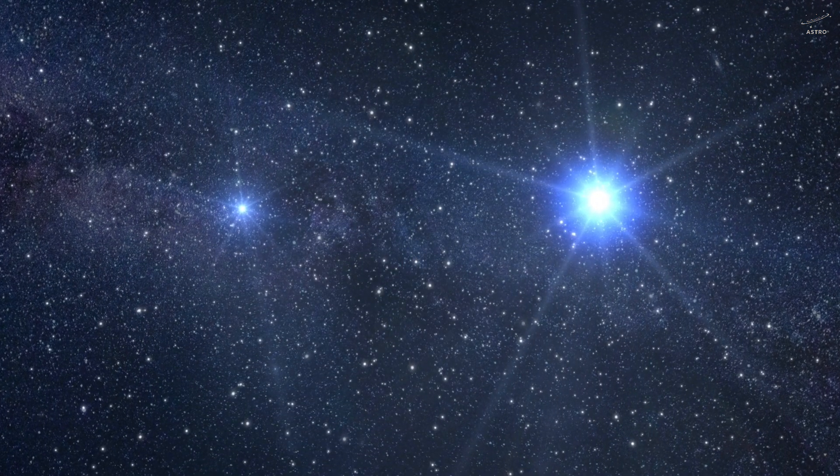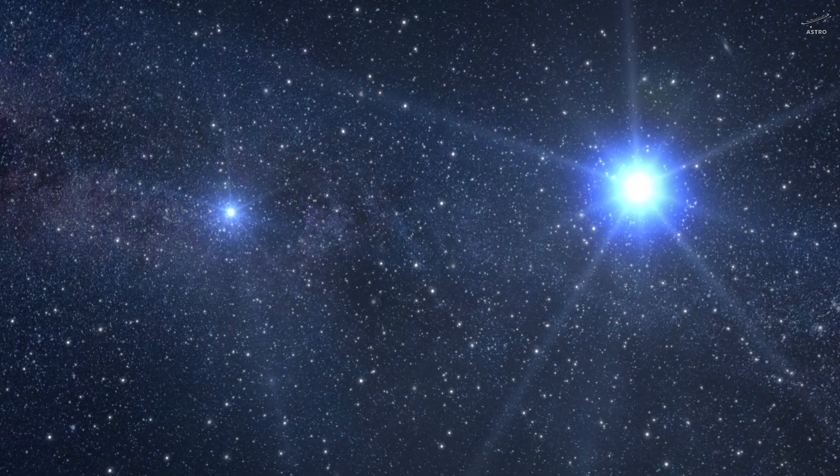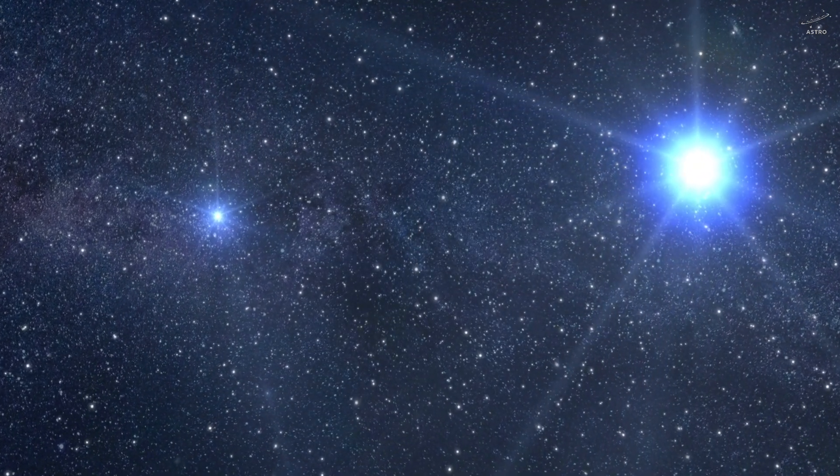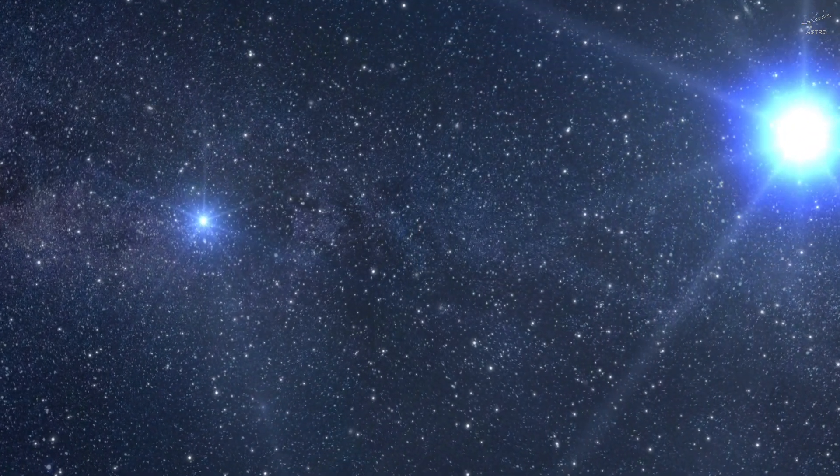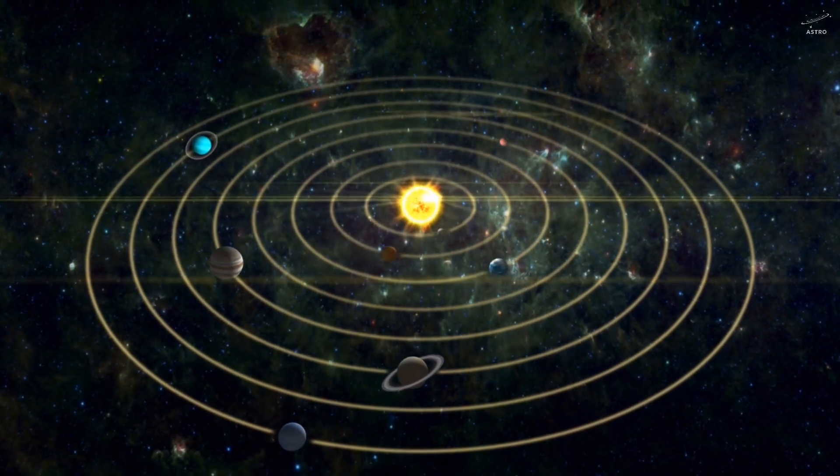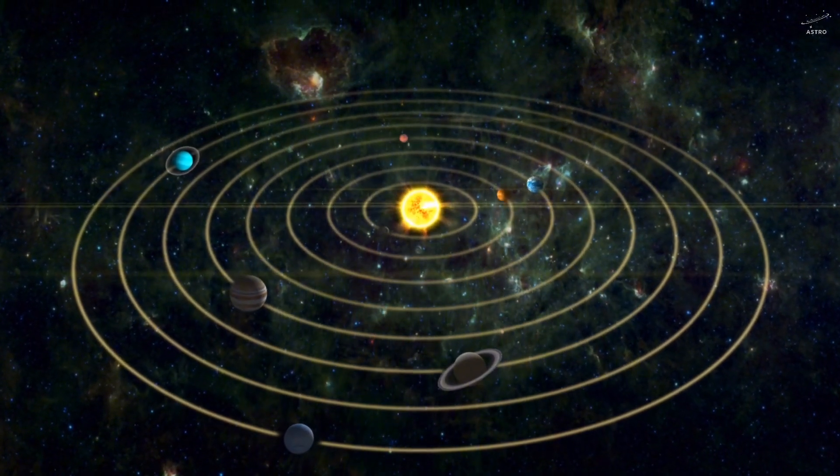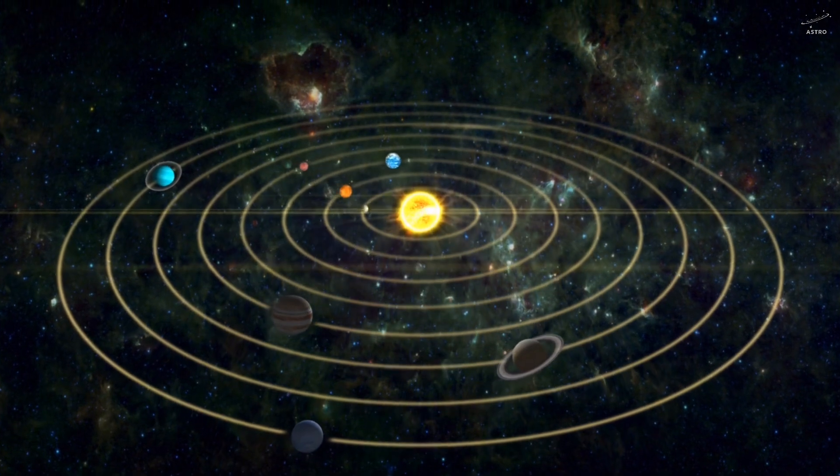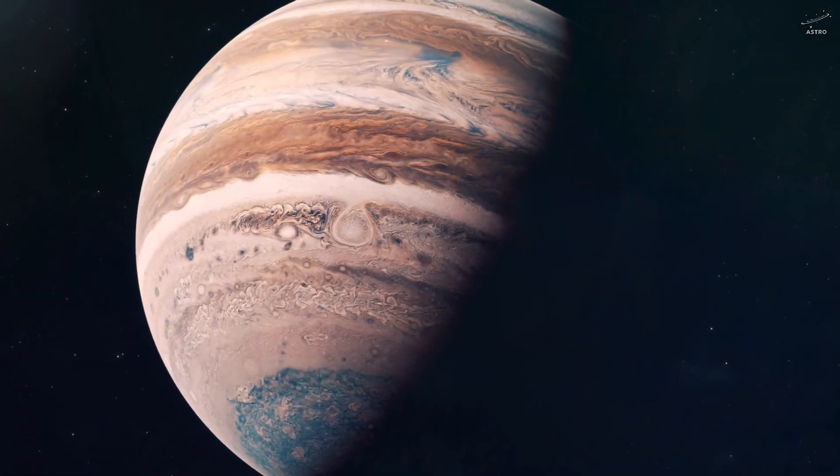But out there, beyond Earth, these binary star systems are everywhere. In fact, about one-third of the stars in our galaxy belong to such pairs. And yet, here in our own solar system, everything revolves around just one sun.